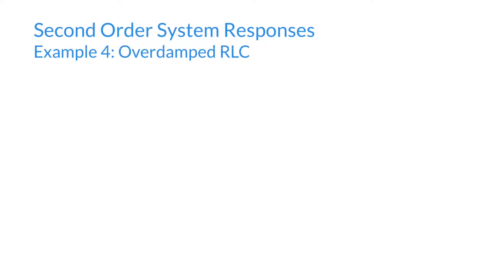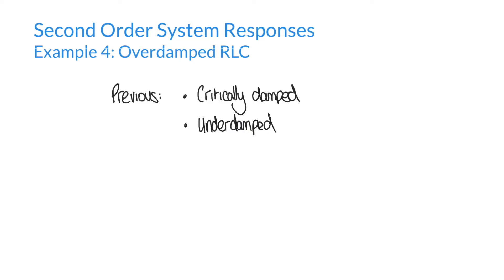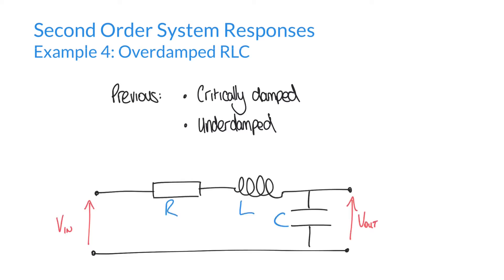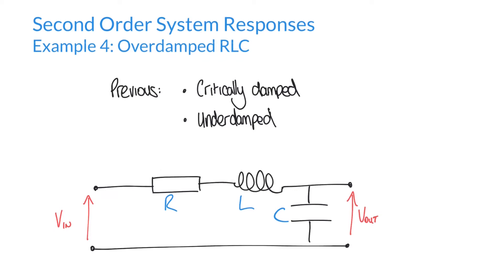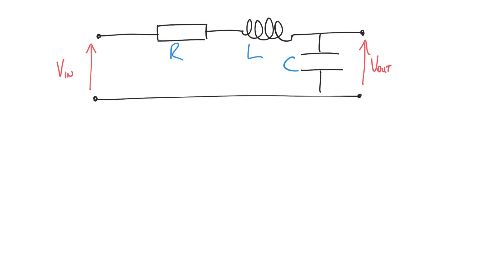Hello and welcome to this fourth and final example of finding the response in second order systems. In this example we are going to look at an over-damped circuit, compared to the previous videos where we've looked at critically damped and under-damped RLC circuits. I'm assuming that you've watched the previous videos — if you're unfamiliar with the topic it's worth going back and watching those videos first.